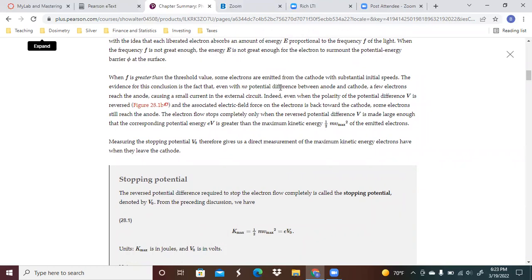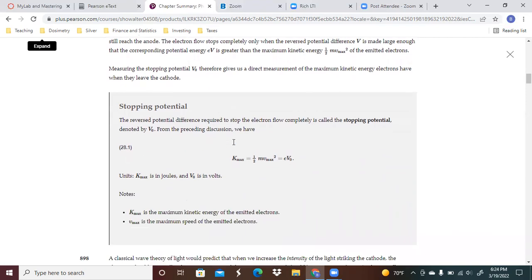When F is greater than the threshold value, some electrons are emitted from the cathode with substantial initial speeds. The evidence is that even with no potential difference between the anode and cathode, a few electrons actually do reach the anode, causing a small current in the external circuit. Indeed, even when the polarity of the potential difference is reversed and the associated electric field pushes the electrons back towards the cathode, some electrons still get there. The electron flow stops completely only when the reverse potential difference is made large enough that the corresponding potential energy is greater than the maximum kinetic energy of the electrons. You have to apply enough energy or potential difference to make the potential energy such that it overcomes any sort of maximum kinetic energy.